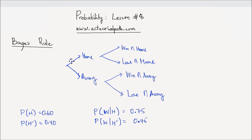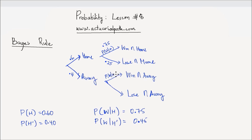On the probability tree, I write 0.6 for the probability of H on one branch, and 40% on the other branch because they have to sum to 1. Given the team played at home, the probability of winning is 75%, so the probability of losing given they played at home is 25%. On the away branch, the conditional probability of winning given they played an away game is 45%, and on that branch I have 55%.